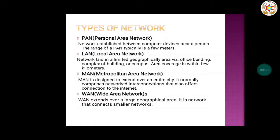Now, another topic is types of network. When we consider how a network is geographically located or deployed, the network is divided into PAN, LAN, MAN, and WAN. PAN is Personal Area Network, deployed in a very small area — for example, when we connect to another device using Bluetooth. The range of a PAN is typically a few meters.